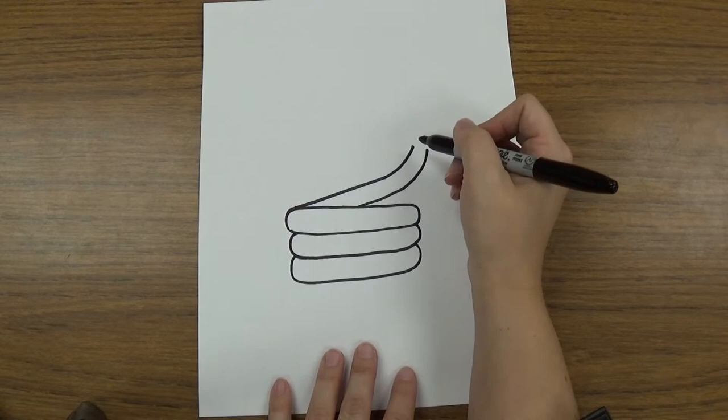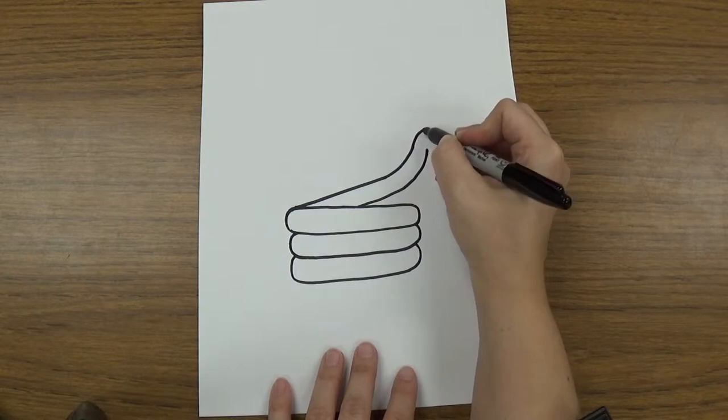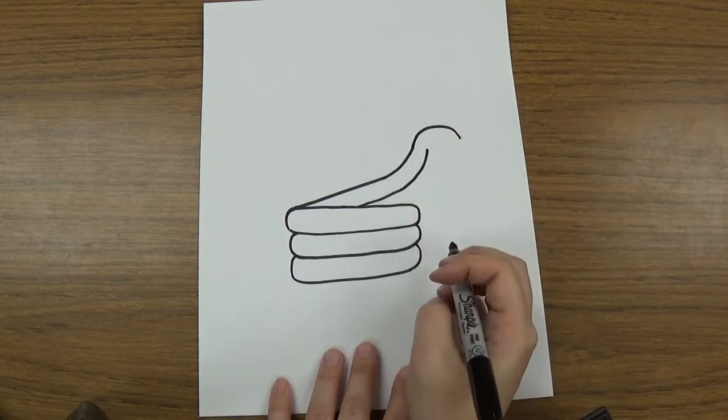And then we're gonna go at the top of this and we're gonna make a curve line that comes sideways, kind of like an upside down smiley face or like a rainbow shape. Just like that.